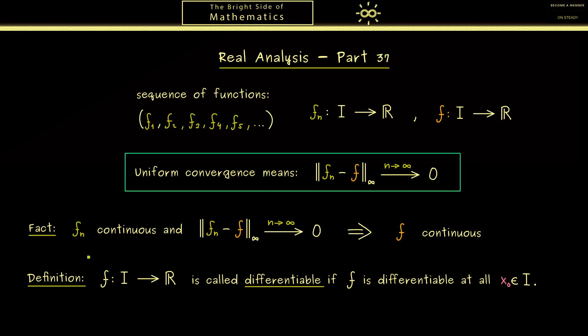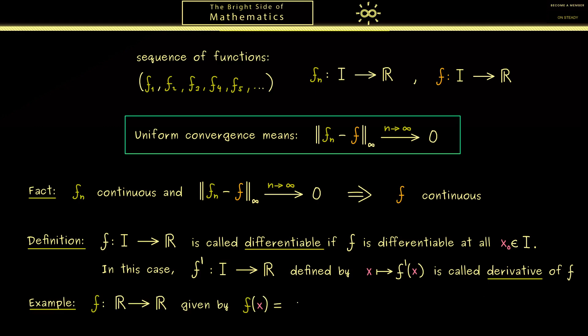In this case, when we have this, we can easily define a new function we call f'. For the definition, we simply map each point x in the domain I to the derivative at this given point. And we call this new function the derivative of f. Later we will have many examples for derivatives, but maybe here let's recall what we already know. If we have a linear polynomial, maybe given by f(x) = 4x + 5, then we know it's differentiable everywhere and the derivative function f' is given by the constant function with constant 4.